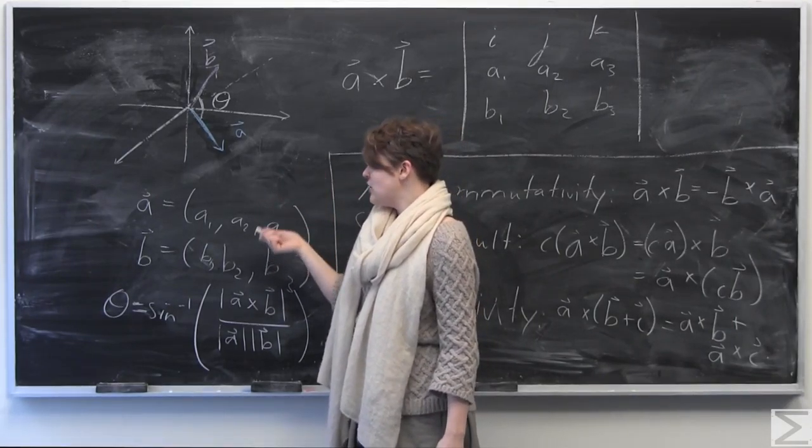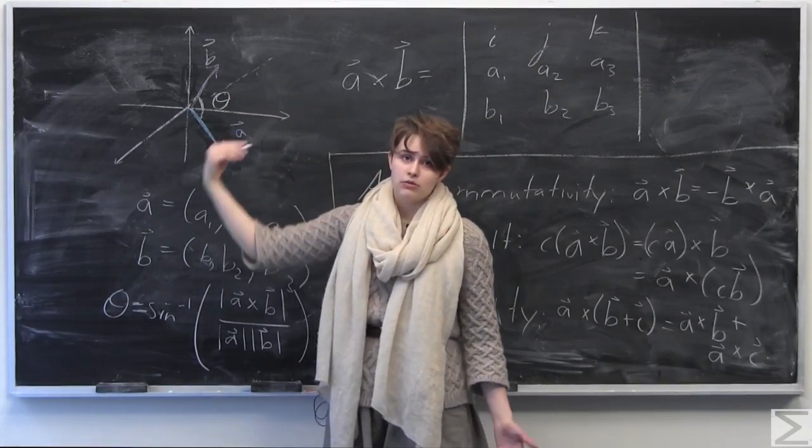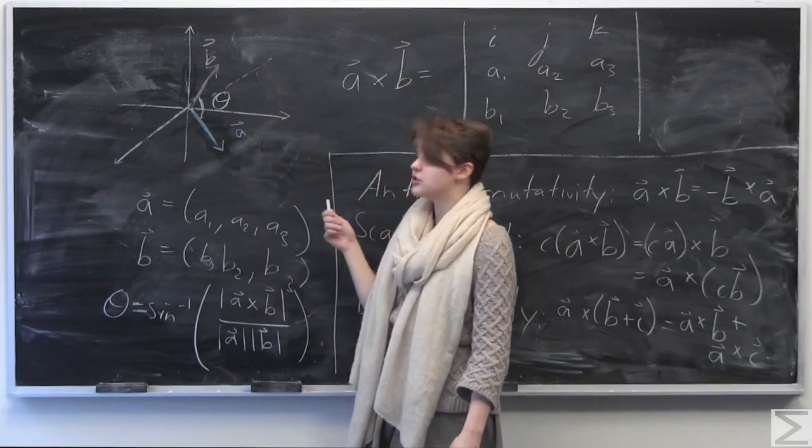So say you're given two vectors in R3 here, A and B, where A has three components, A1, A2, A3, and B has three components, B1, B2, and B3.